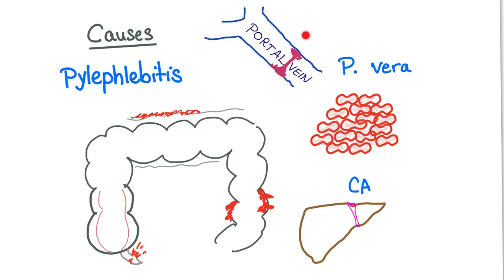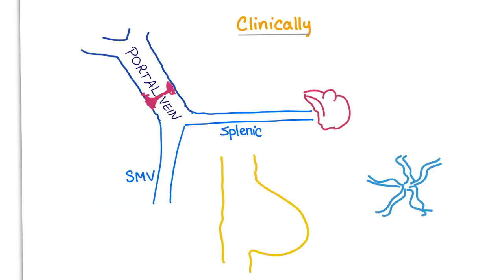Clinically, what is the presentation? The portal vein is the union of the splenic vein and the superior mesenteric vein. This is the Mercedes sign, Mercedes logo. Portal vein, splenic vein, splenic vein, splenic vein.